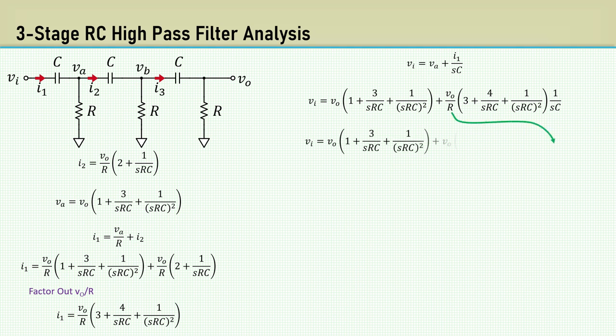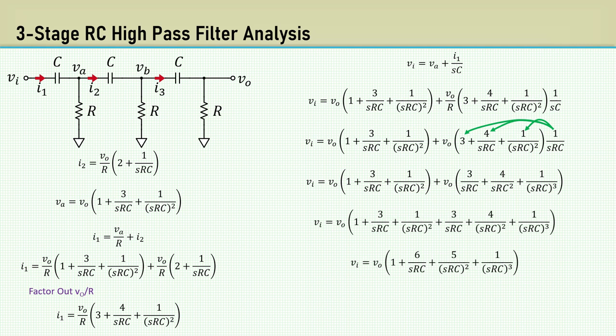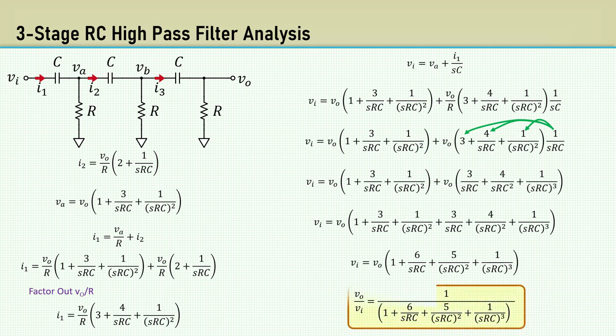I'll move that R over to the other side. Then distribute 1 over SRC into the brackets. Then combine terms. Finally, rearrange to solve for the transfer function V_out over V_in.